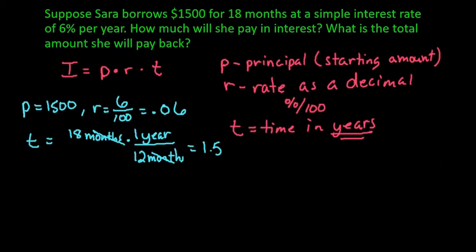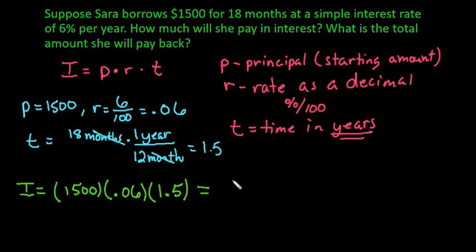The first thing that we would do is just find the interest. We would take and just plug in our values in for each of our letters. $1,500 would go first, times 0.06, times 1.5. We would just simply multiply this out. And this gives us $135.